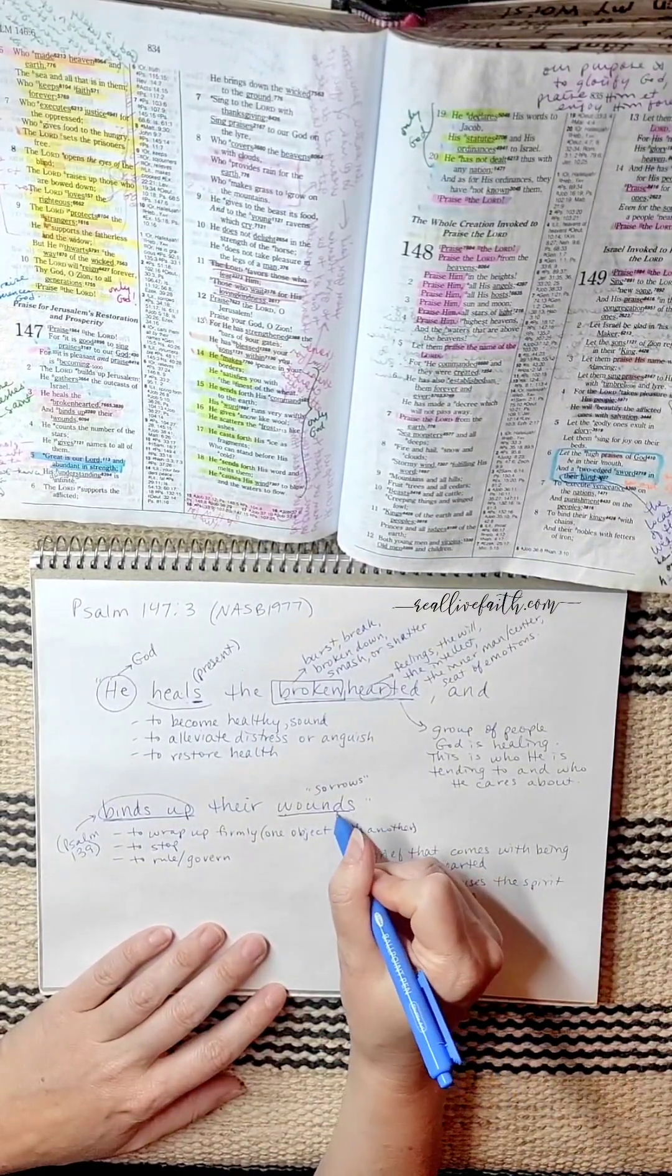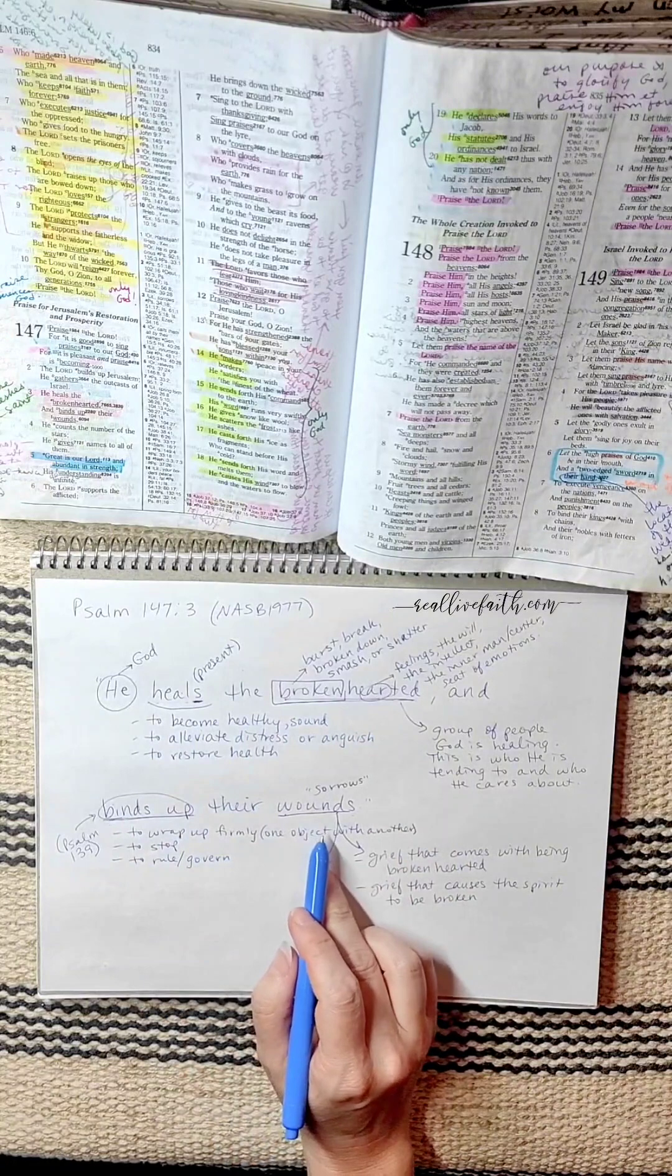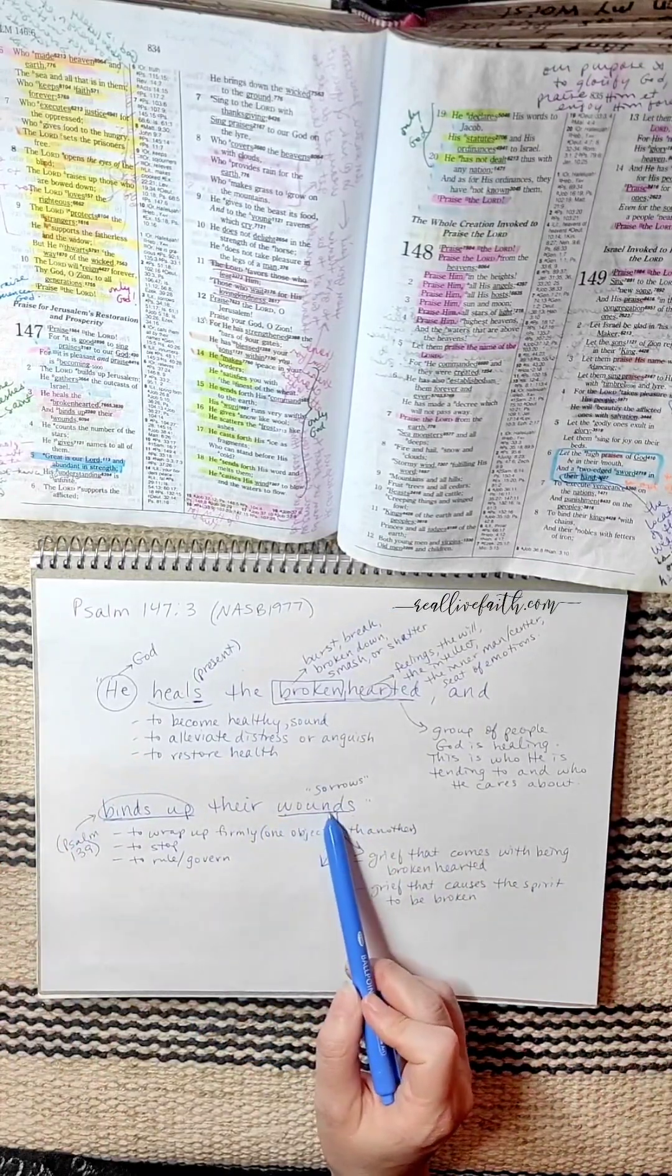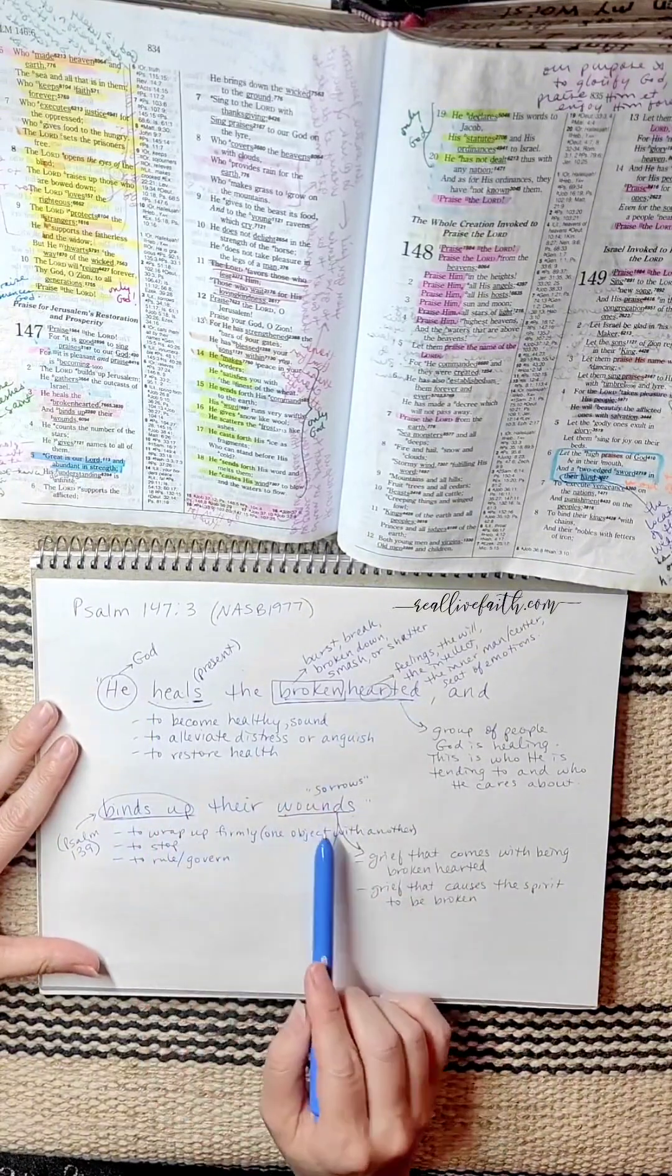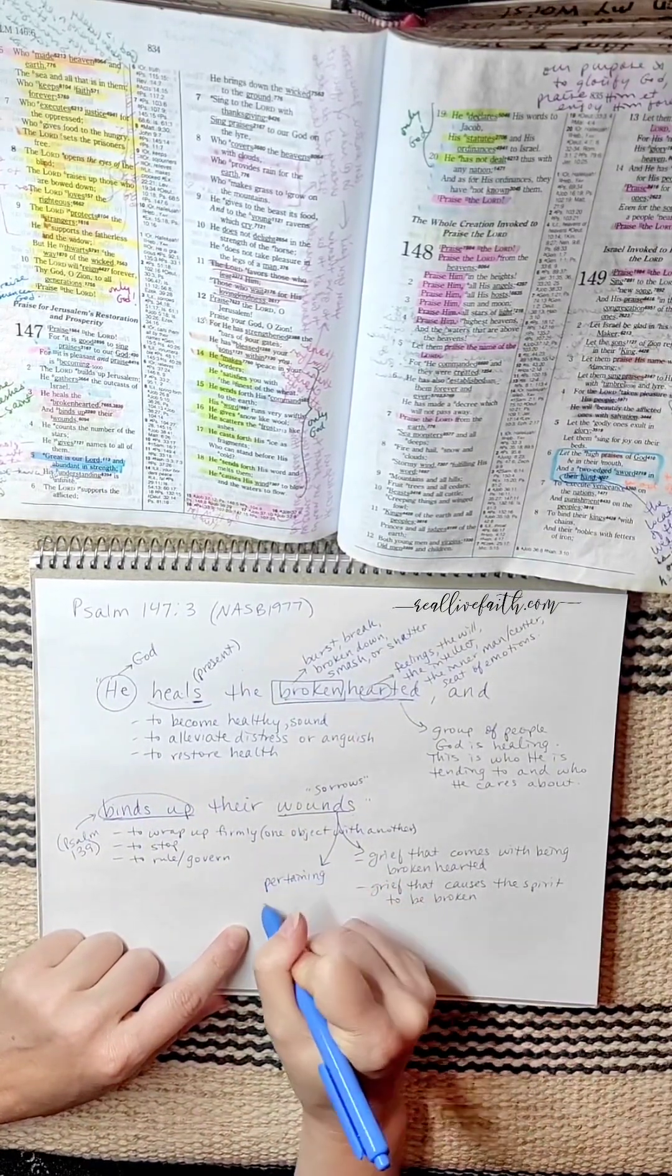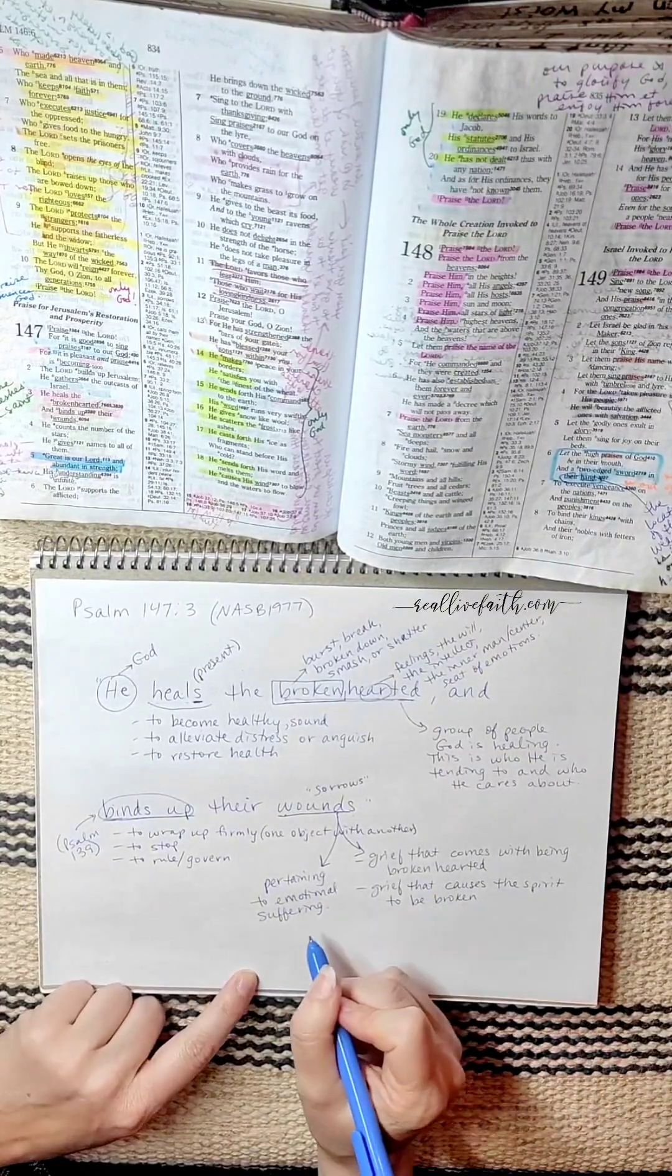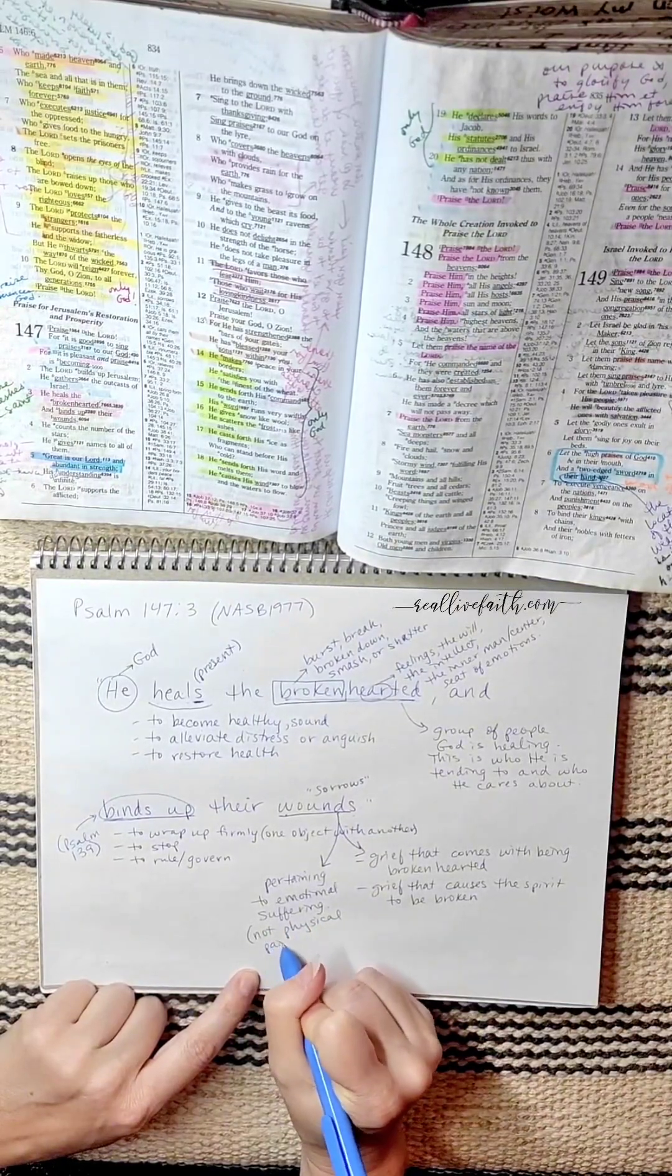And you might be thinking, well, I wonder if this is like a physical wound. Well, in this situation, that's not really the implication. Yes, God can heal your broken arm. He can heal a wound that you incurred because you fell while you were hiking. Yes. But with this particular verse, it's really pertaining more to the emotional suffering. Have you ever experienced emotional suffering? So it's not really physical pain or injury that he's talking about here.